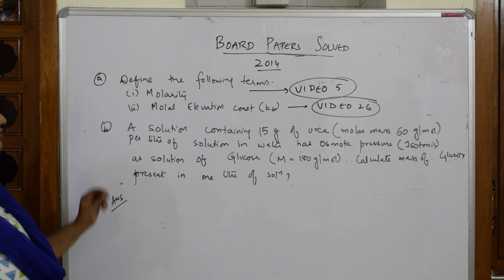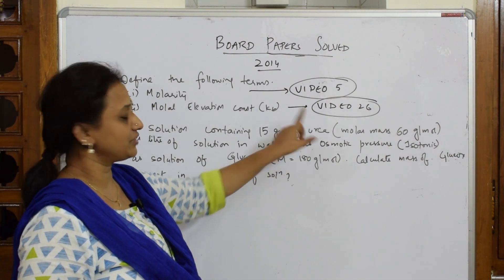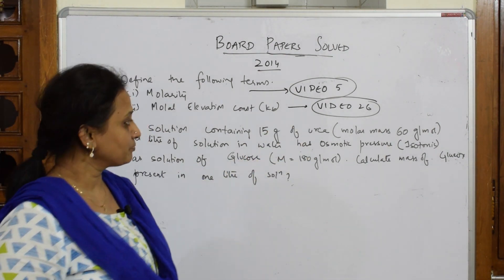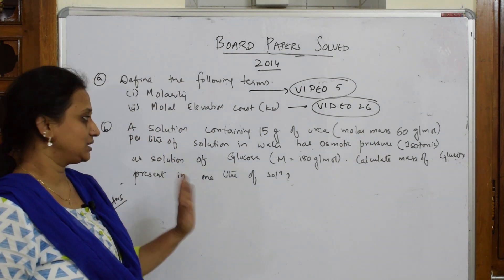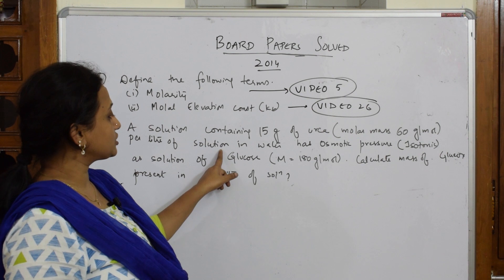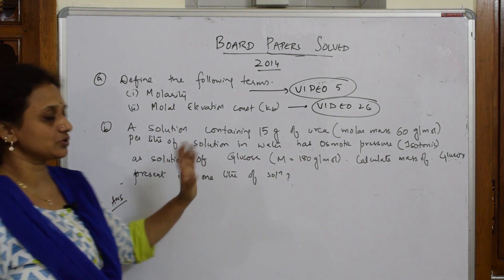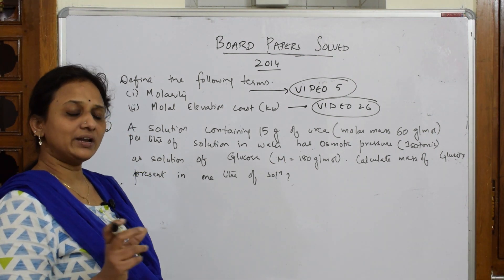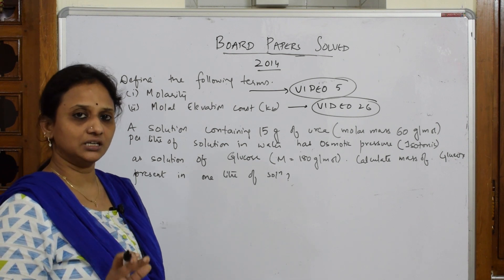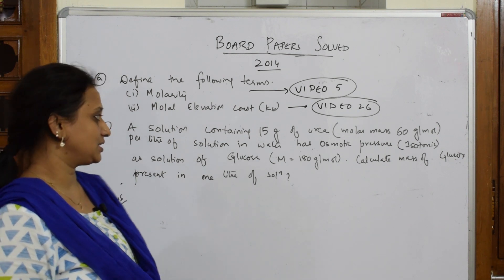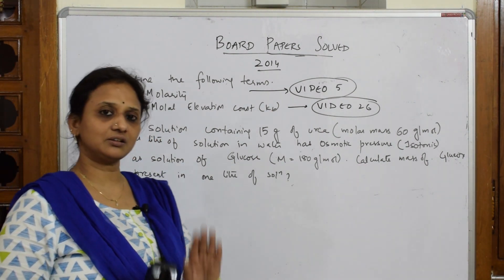Now let us come back and solve this numerical. A solution containing 15 grams of urea — so w₂ is given as 15 grams and M₂ is 60 grams per mole — in water has an osmotic pressure isotonic with a solution of glucose. There are two solution systems: the osmotic pressure of glucose and the osmotic pressure of urea are equal. We need to calculate the mass of glucose present in one liter of solution.